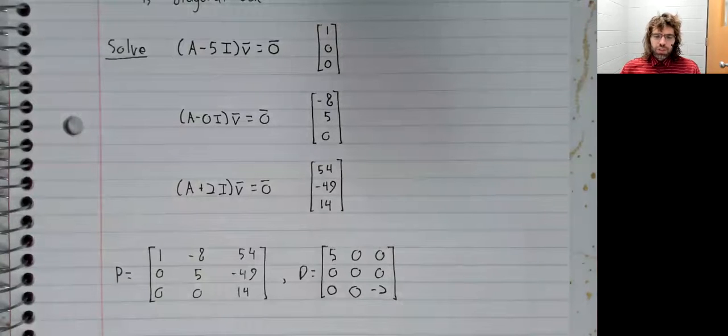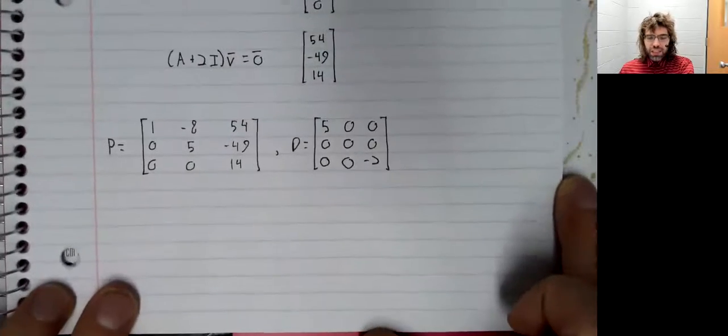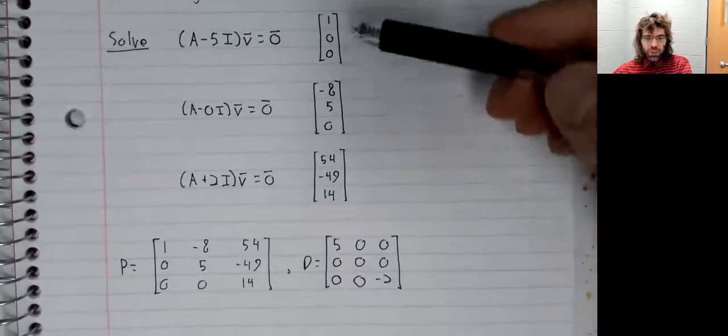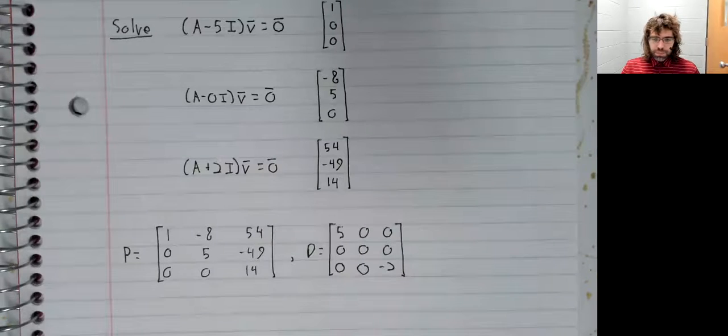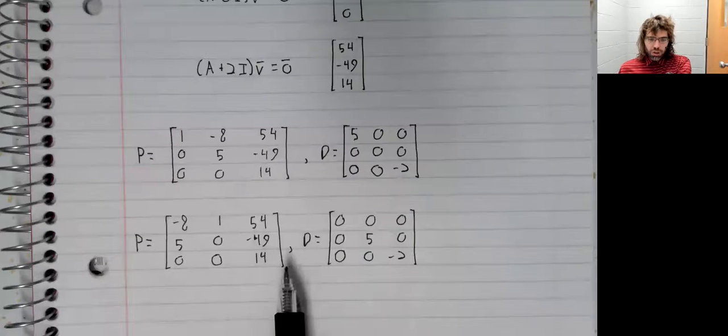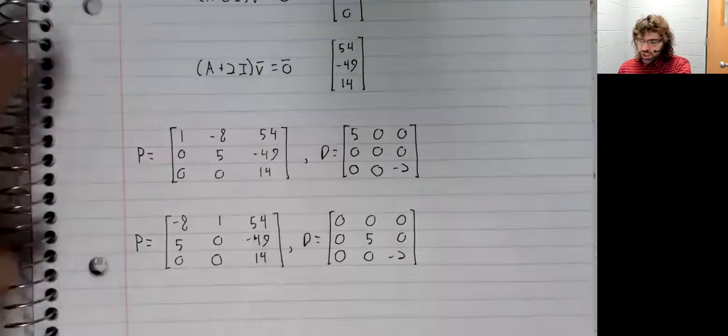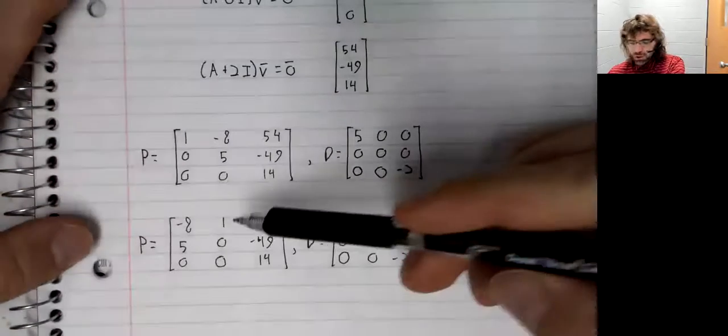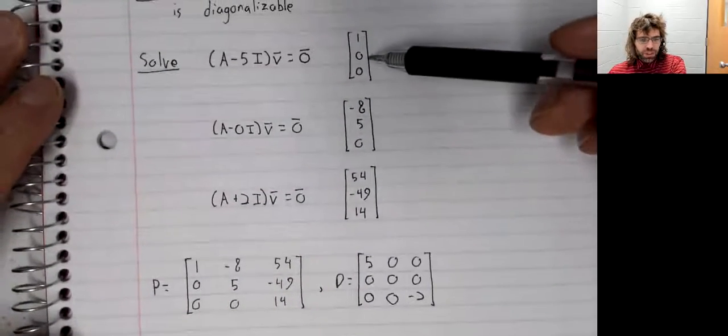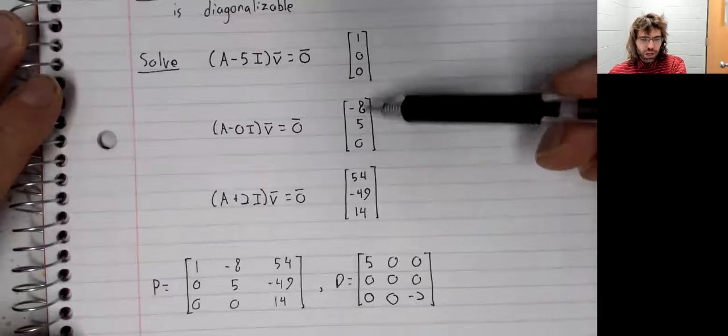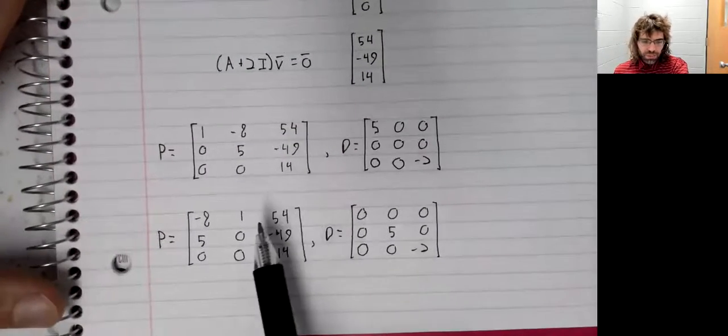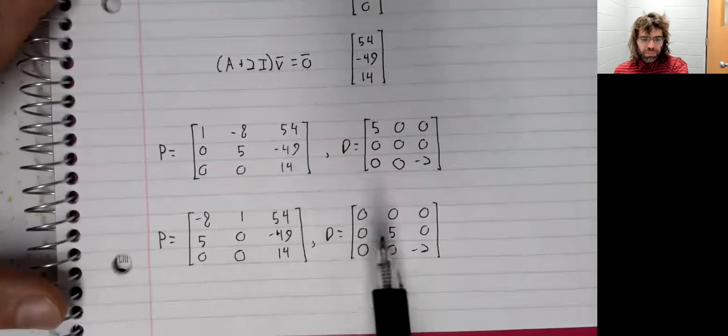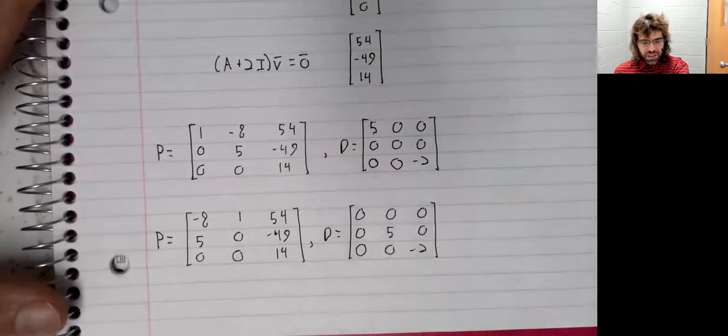This diagonalization isn't unique. Just from the work we've done here, this is also a diagonalization. If when we created P, we wrote these columns down in a different order, we'd get a different P and we'd get a different D.